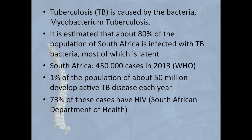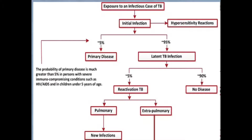80% of the population has TB, most of which is latent. WHO estimates that we have 450,000 cases of TB per year, meaning that 1% of our population has TB. The South African Department of Health estimates that 73% of people who have active TB are also infected with HIV.